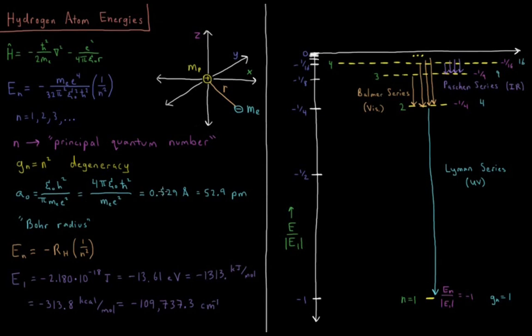This equals 0.529 angstroms or 52.9 picometers. One angstrom is 10 to the minus 10 meters, one picometer is 10 to the minus 12 meters, one trillionth of a meter. Not sure why I put that there, but okay, that's fine.